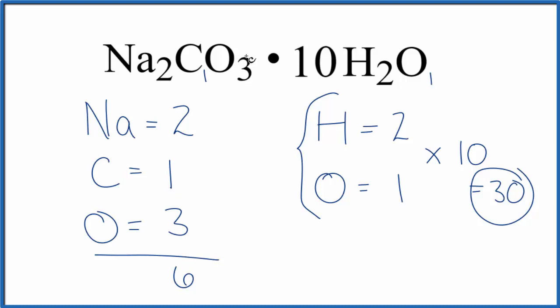And then you have the 6 here for the sodium carbonate. If you were asked to find the number of oxygen atoms, you'd have to have 10 times the 1, that 10 plus these 3. That would give you 13.